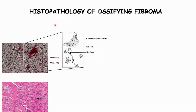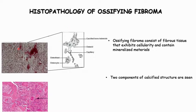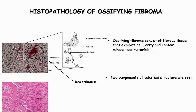Today we will be seeing the histopathology of ossifying fibroma, which is a fibro-osseous lesion consisting of fibrous tissue that exhibits cellularity and contains mineralized material. It majorly has two calcified structures: bony trabeculae and cementum-like structure.